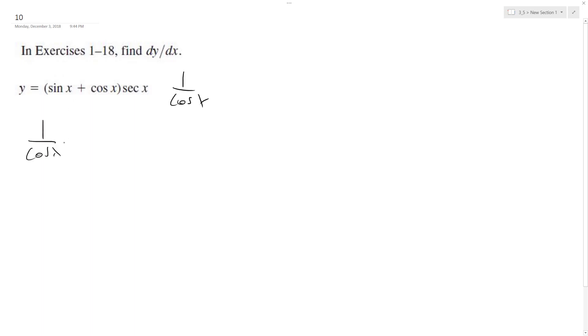So 1 over cosine x times sine x plus cosine x. What we end up getting is sine of x over cosine x plus cosine x over cosine x.